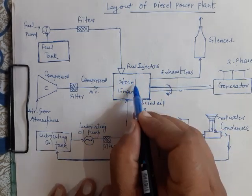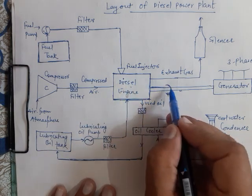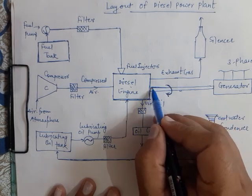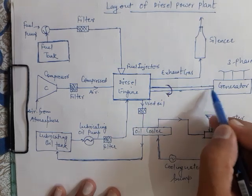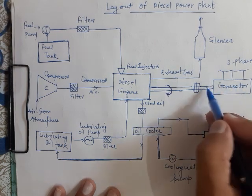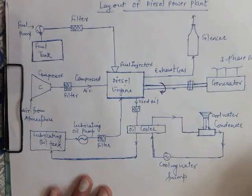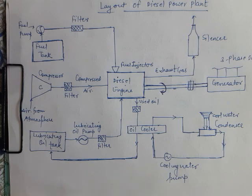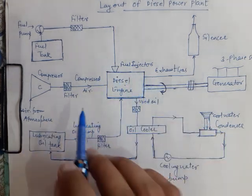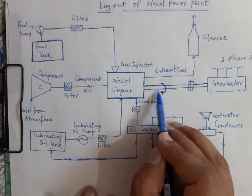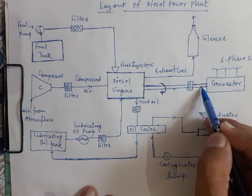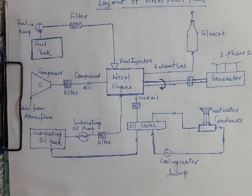Due to combustion of the fuel, thrust is exerted on the piston, and the reciprocating motion of the piston is converted into the rotary motion of the crankshaft by means of a connecting rod and crank. Since the shaft rotates, there is mechanical energy. This shaft is coupled with the shaft of the generator, and inside the generator, the mechanical energy is converted into electrical energy.